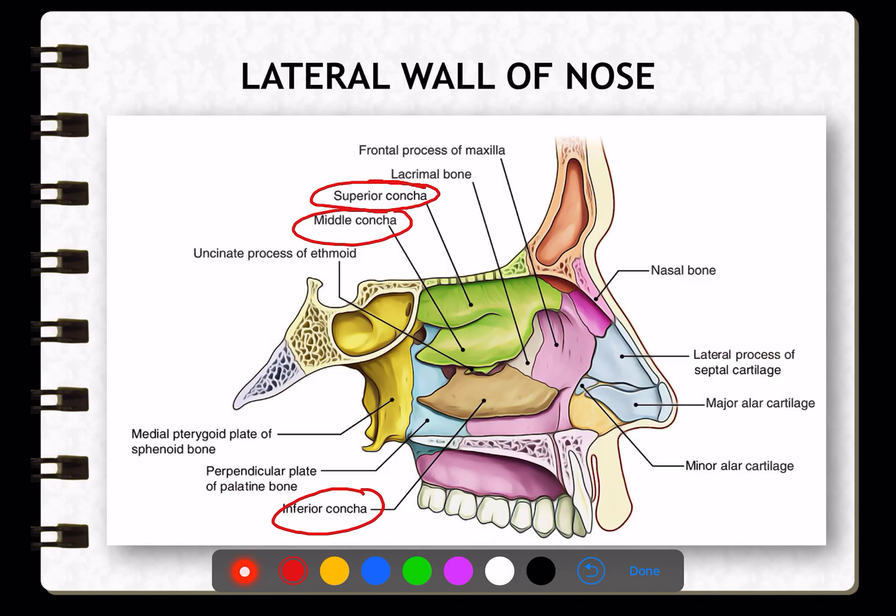These conchae overlie the meatus. The space beneath each concha is called the meatus. There are superior, middle, and inferior meatus. Out of all, the inferior meatus is the largest.